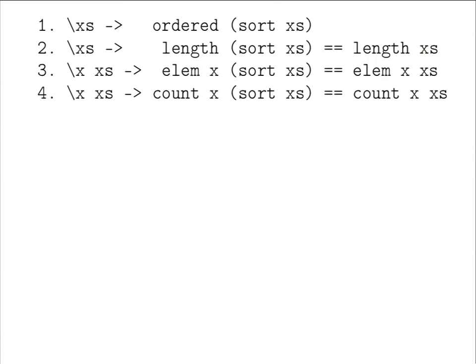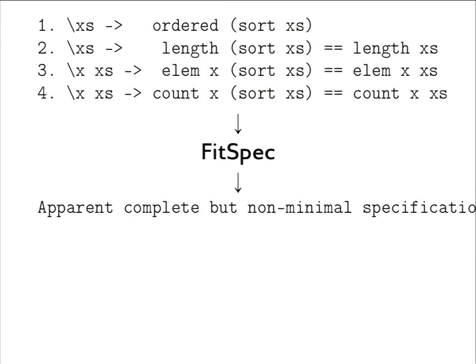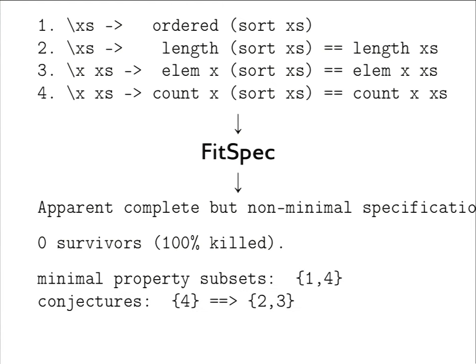Are we done? Let's pass the four properties to FitSpec again. It reports an apparently complete specification, but not minimal — there are redundant properties. Zero survivors; 100% were killed. It reports that the minimal property subset is just properties 1 and 4, and conjectures that property 4 implies properties 2 and 3.